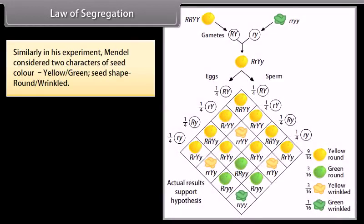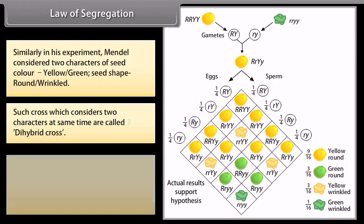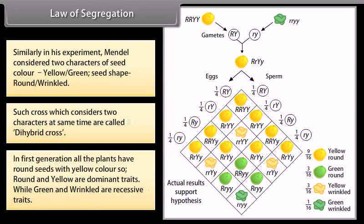Similarly, in his experiment, Mendel considered two characters of seed color: yellow, green, and seed shape: round, wrinkled. Such cross which considers two characters at the same time are called dihybrid cross. In first generation, all the plants have round seeds with yellow color. So, round and yellow are dominant traits, while green and wrinkled are recessive traits.